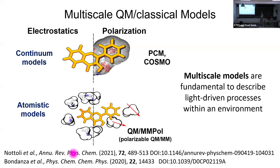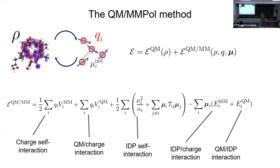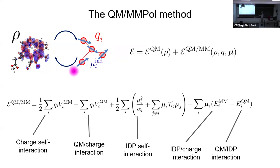The idea is we want to use this kind of multi-scale model to describe light-driven processes. In QM/MM pol — meaning QM/MM where you introduce polarization as induced dipoles — you have your QM part with the electron density and nuclei. This density interacts with charges of the solvent or environment but also with induced dipoles. These dipoles can be induced by the external field and can polarize back the QM part. This mutual polarization is the key feature.